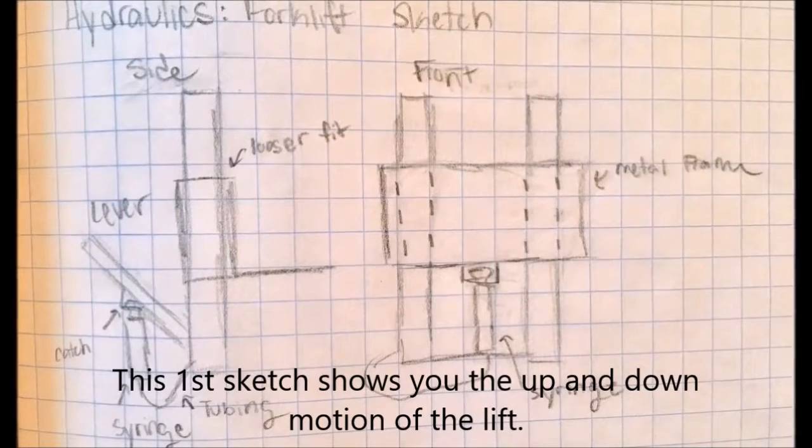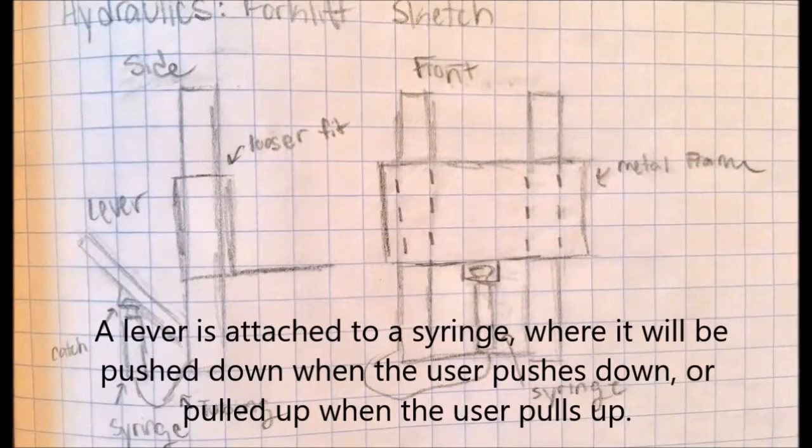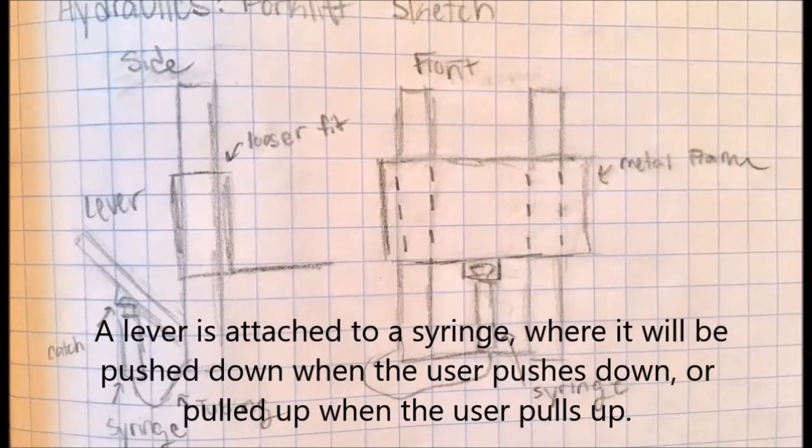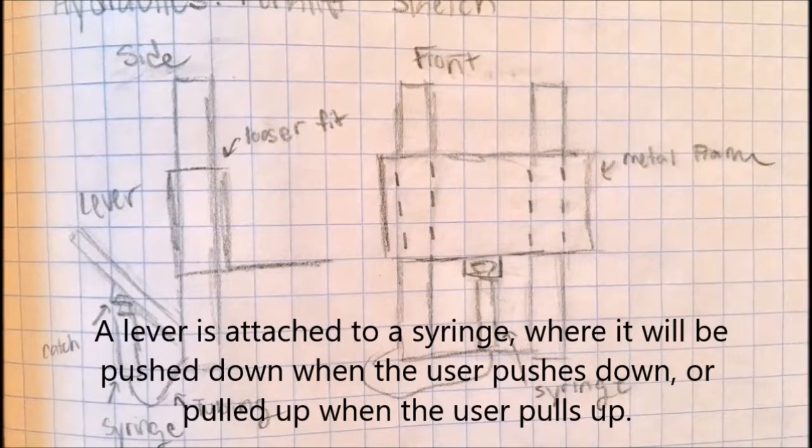This first sketch shows you the up and down motion of the lift. A lever is attached to a syringe, where it will be pushed down when the user pushes down, or pulled up when the user pulls up.